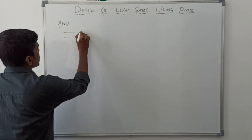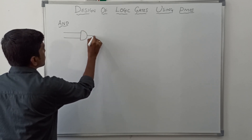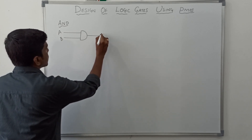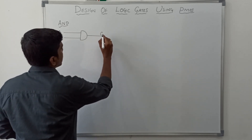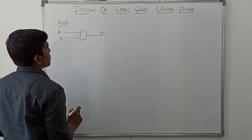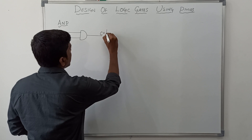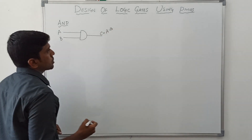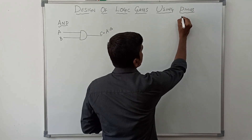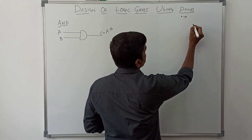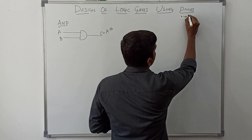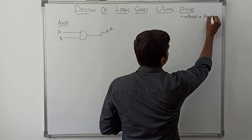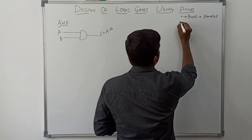Let me draw the symbol of AND gate. The inputs of the AND gate are A, B, and C. The boolean expression for AND gate is A dot B. In PMOS logic, the dot operation present in the boolean expression means PMOS transistors are connected in parallel. This is the first rule.